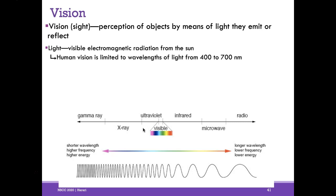Human vision is limited to wavelengths of light from 400 to 700 nanometers. On one end we have very high frequency gamma rays, and on the other end very low frequency long-wavelength radio waves. Radio waves, microwaves, and infrared rays are all invisible to us. Microwaves can heat up water molecules in food; radio waves can transmit sound energy; infrared can be used for imaging and heating. UV light and X-rays are outside the visible spectrum and are damaging — X-rays damage DNA.